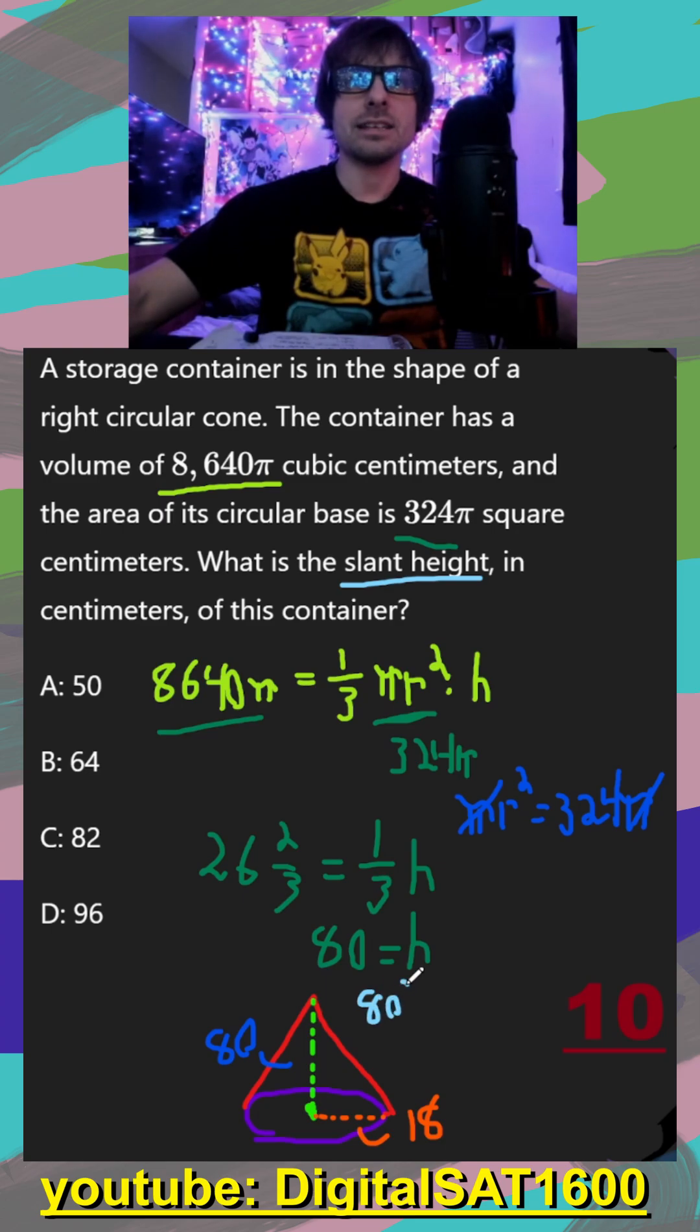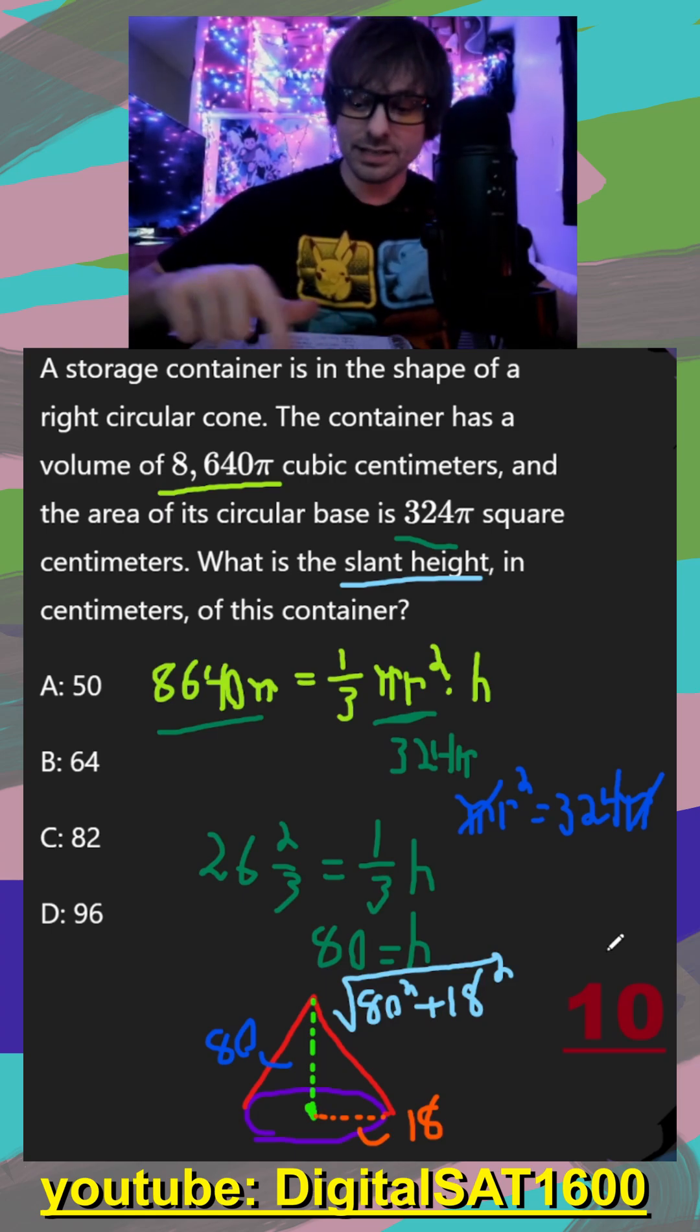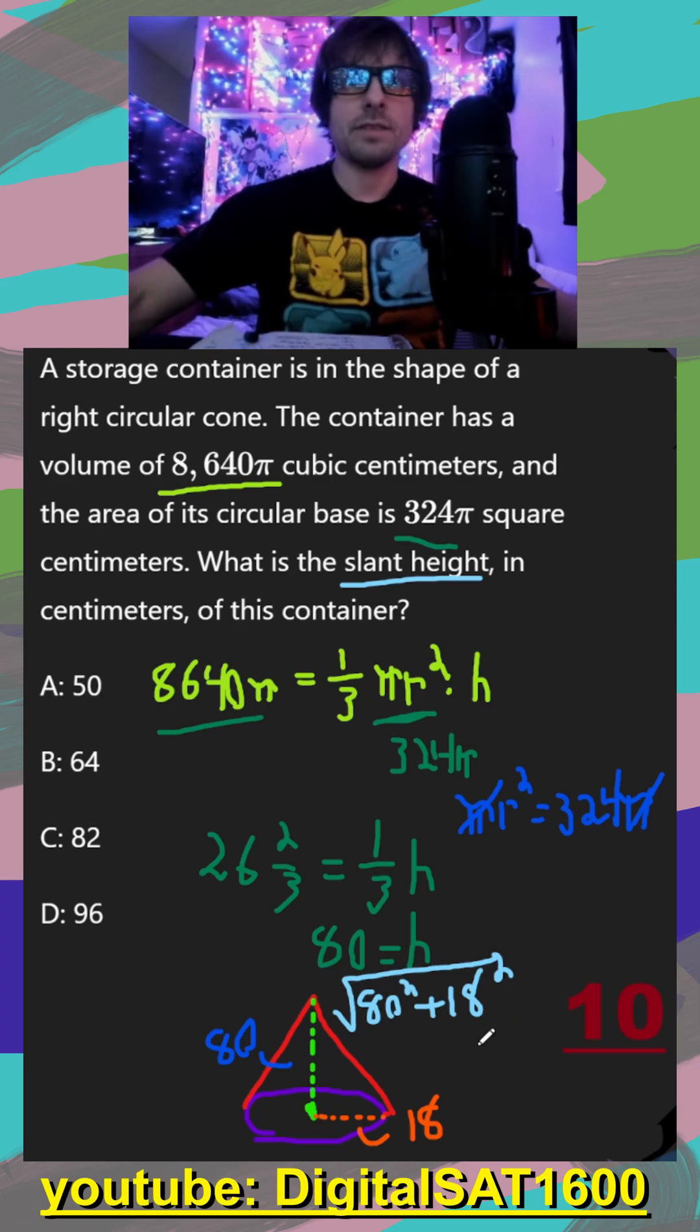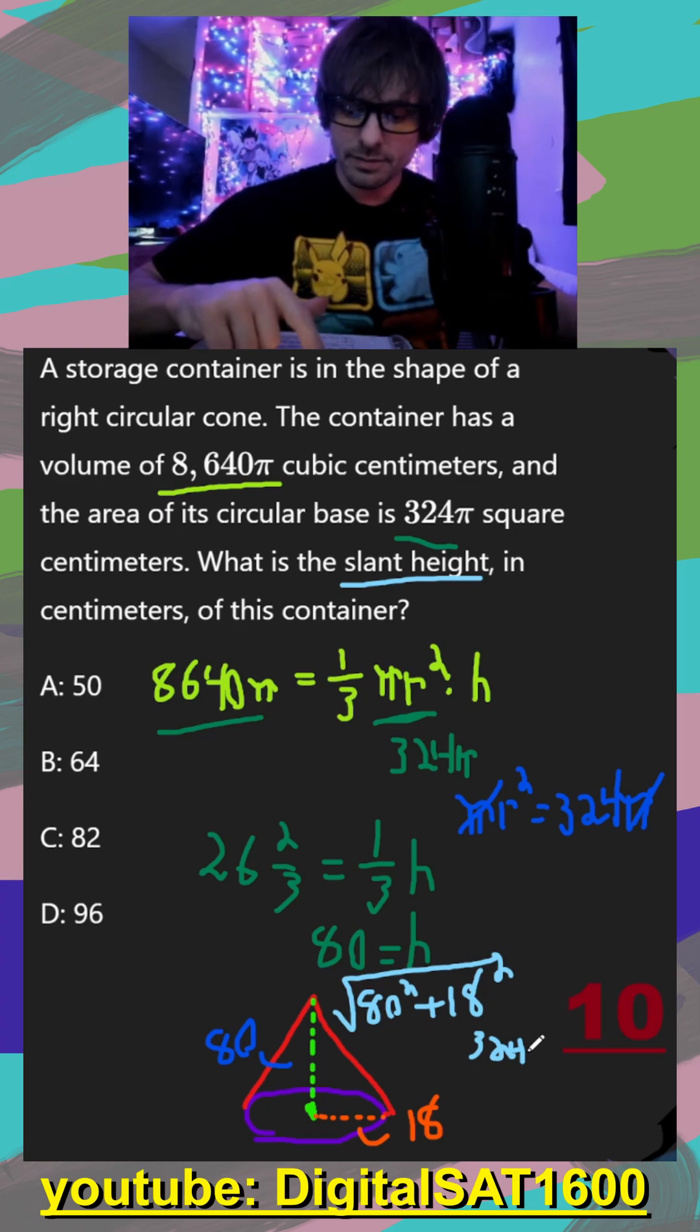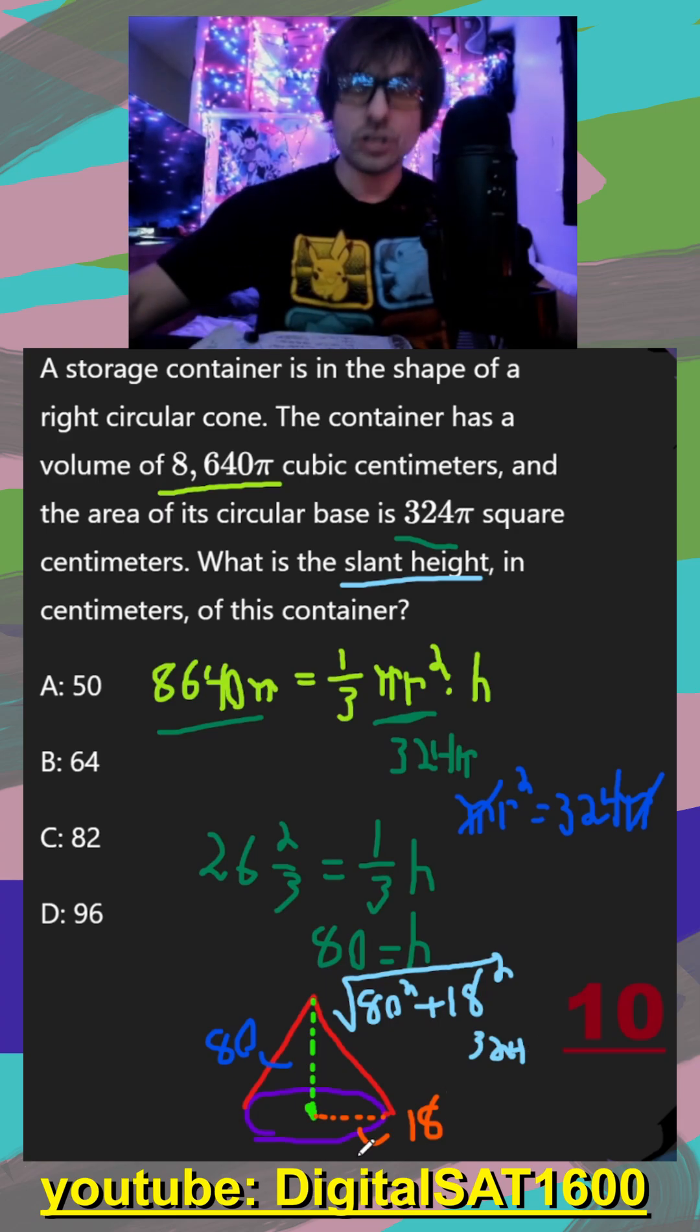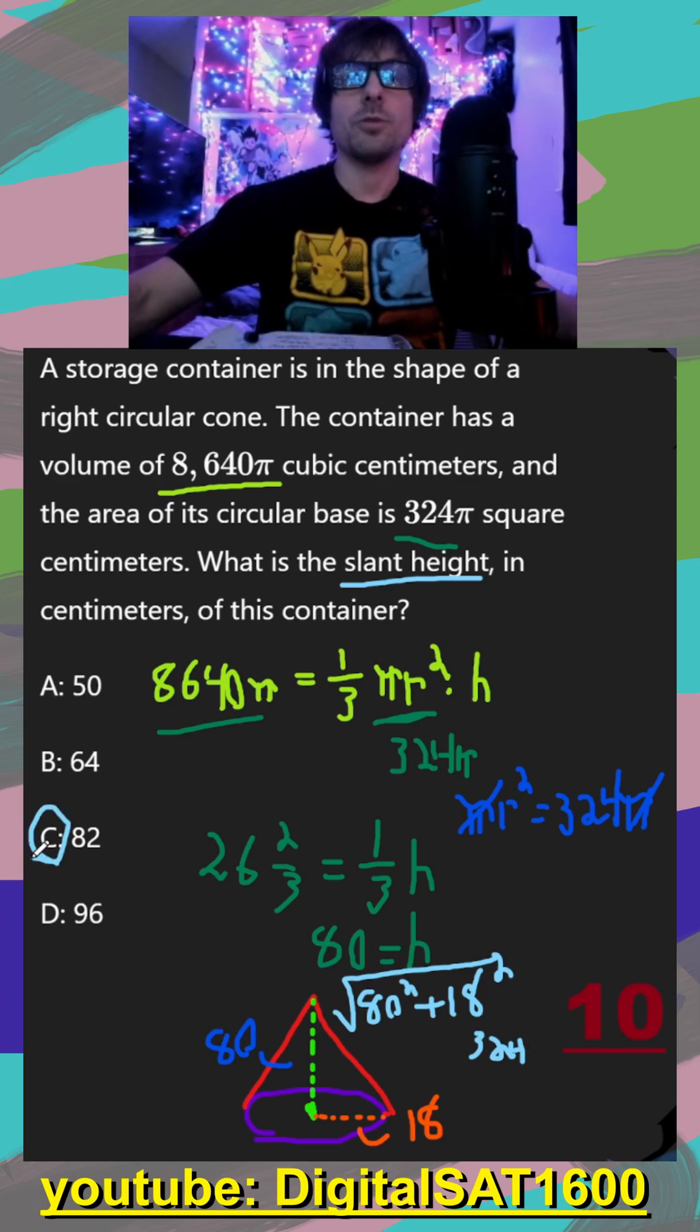So all I have to do is 80² plus 18², and then I can do the square root of that. That's just Pythagorean's theorem. So 18 squared, that got us the 324. And then 80 squared, that gets a 6400, so that plus 324. And then if I take the square root of that, we should get 82 for our slant height.